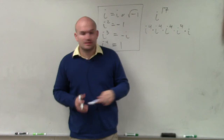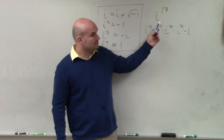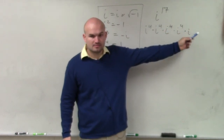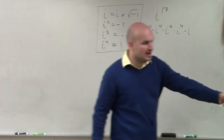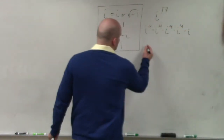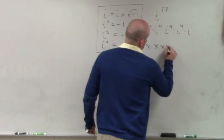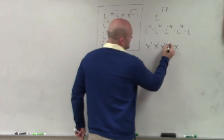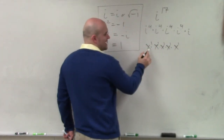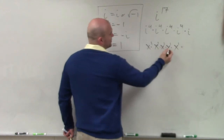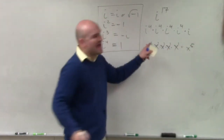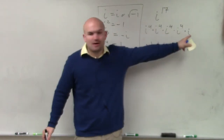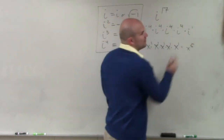i to the 17th — 4, 8, 12, 16, 17. Right, remember, same thing. If I was going to do x times x times x times x times x, you're really adding the exponents, right? And that's x to the 1, 2, 3, 4 — that's x to the 5th, right? You're adding the powers. So you add all the powers to give you that, and that's really i to the 1st.